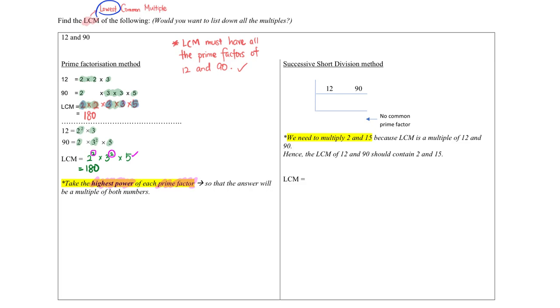And I'm going to introduce now to a second method here, by the successive short division method. So in this case here, we would divide by the common prime factor, so in this case is 2, and I will leave with 6 and 45. Is there a common prime factor that I could divide with? 2 cannot. The next smallest one will be 3, and that will be 2 and 15. And for the lowest common multiple, we will then have to consider—we do need to multiply 2 and 15 just so that LCM will be a multiple of 12 and 90. And hence for this method, I will still get the same answer.